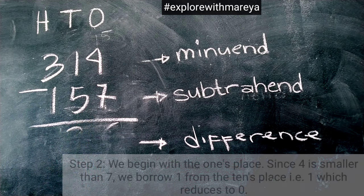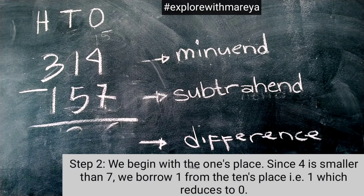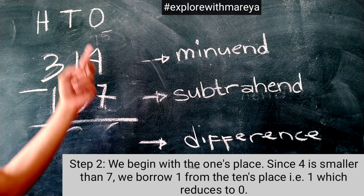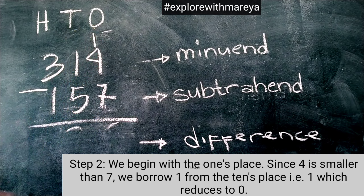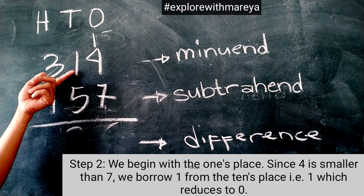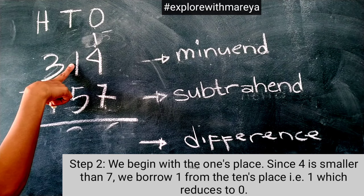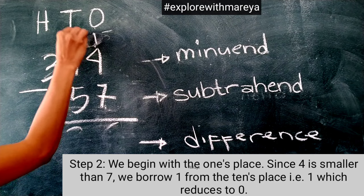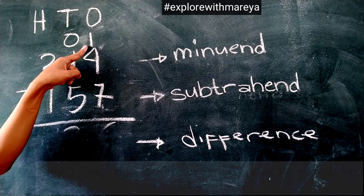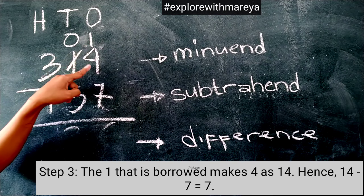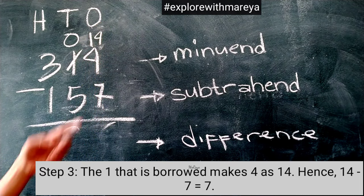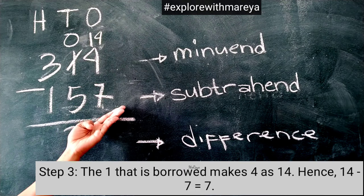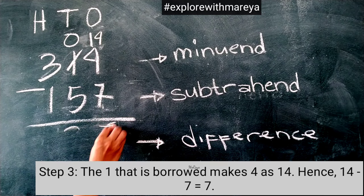Step 2: We begin with the 1's place. Since 4 is smaller than 7, we borrow 1 from the 10's place, which reduces to 0. The 1 that is borrowed makes 4 become 14. Hence, 14 minus 7 equals 7.